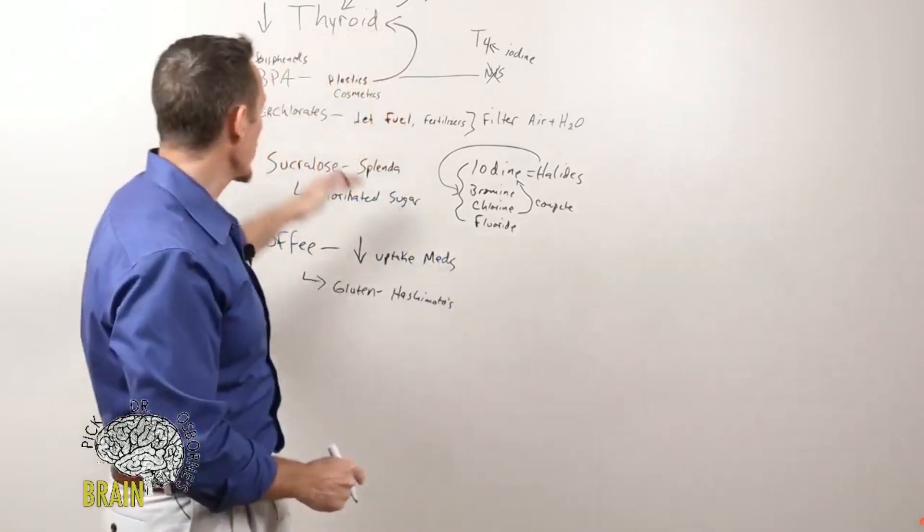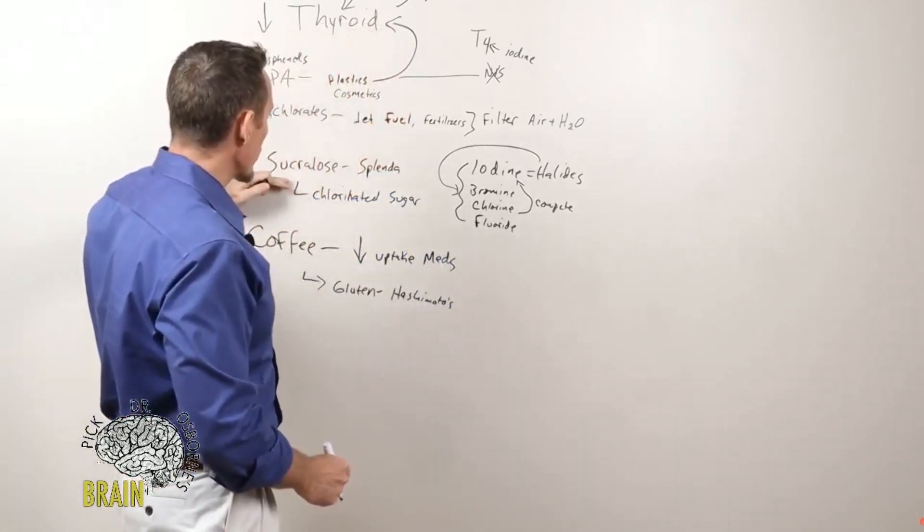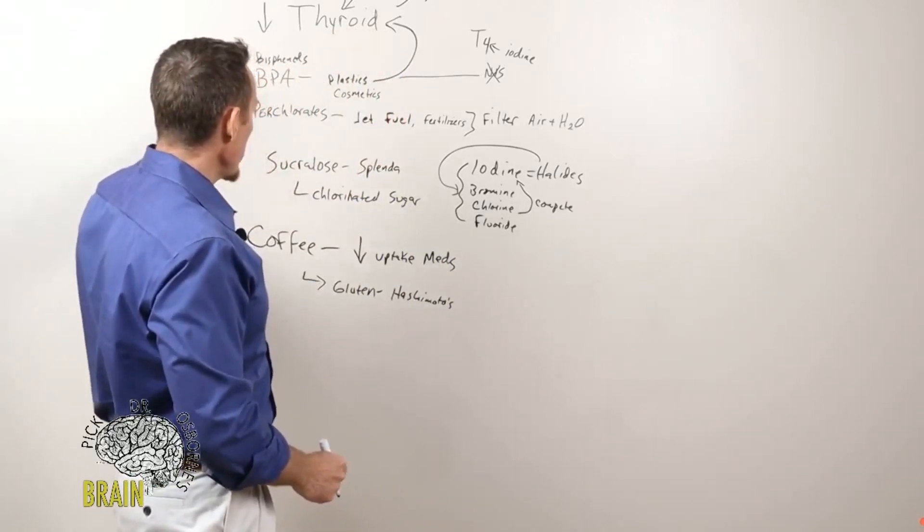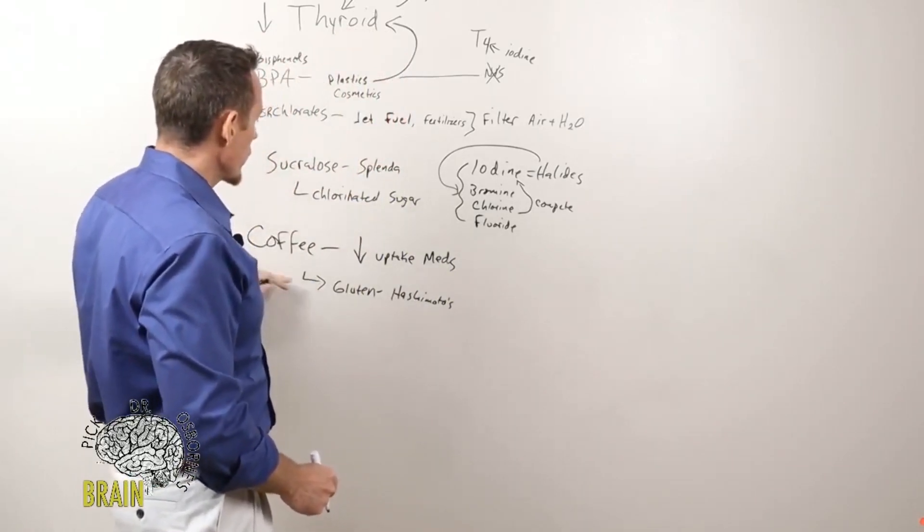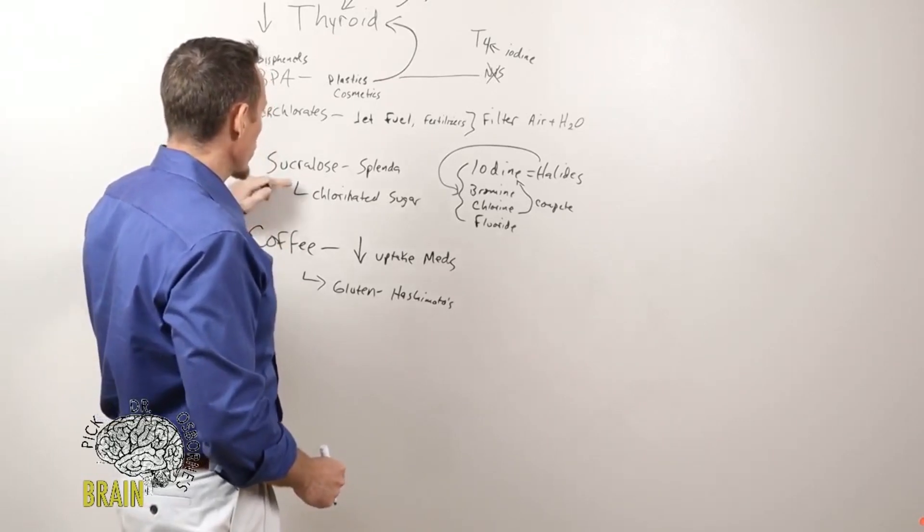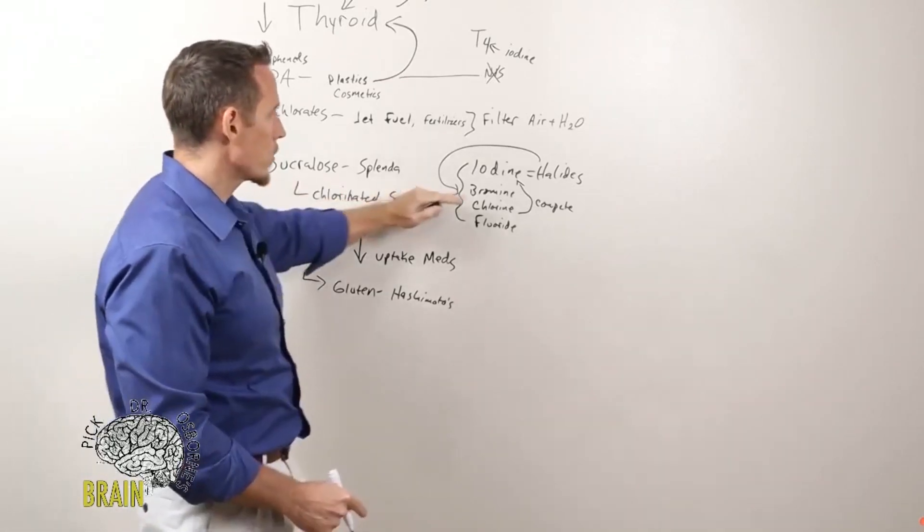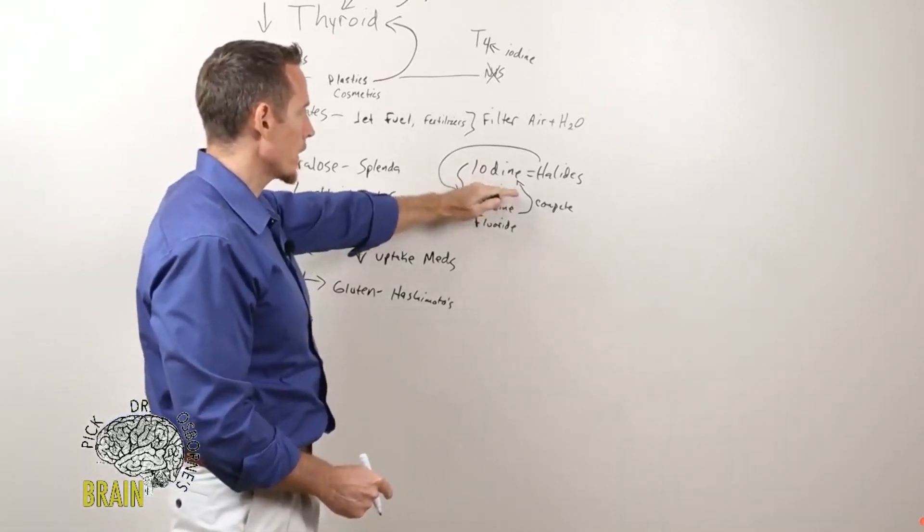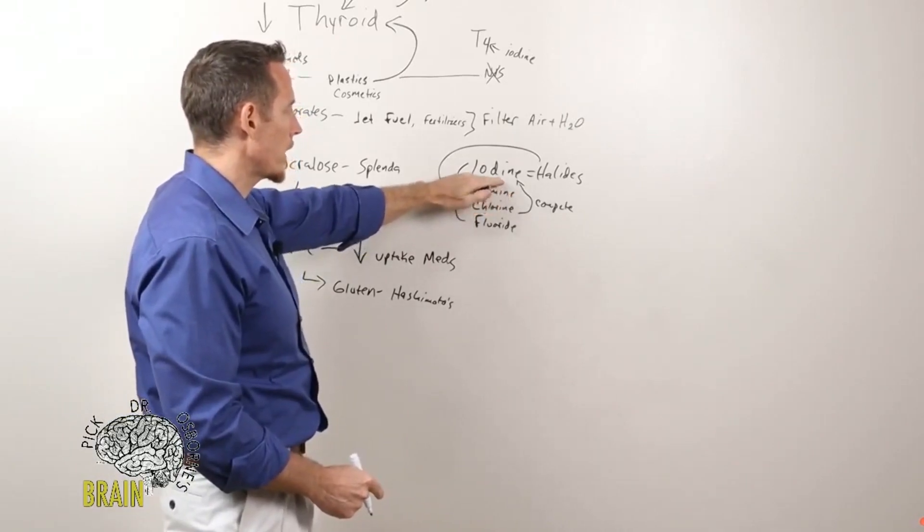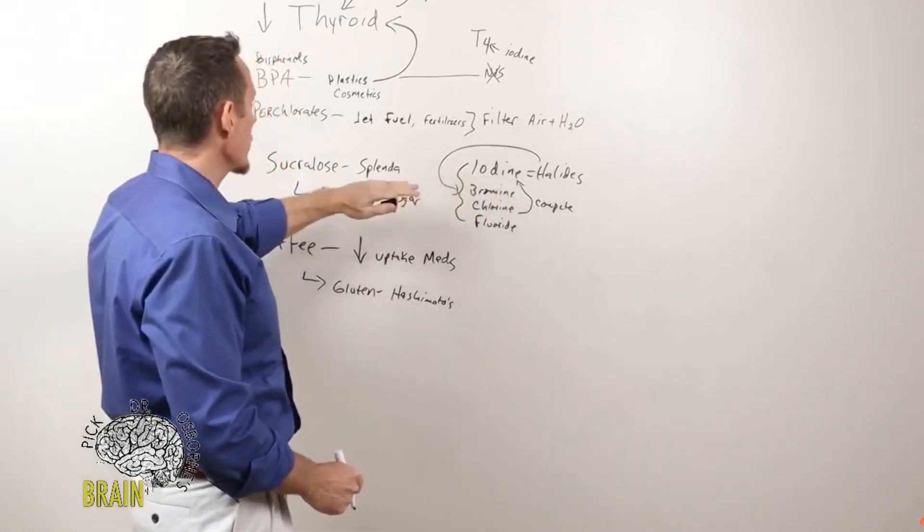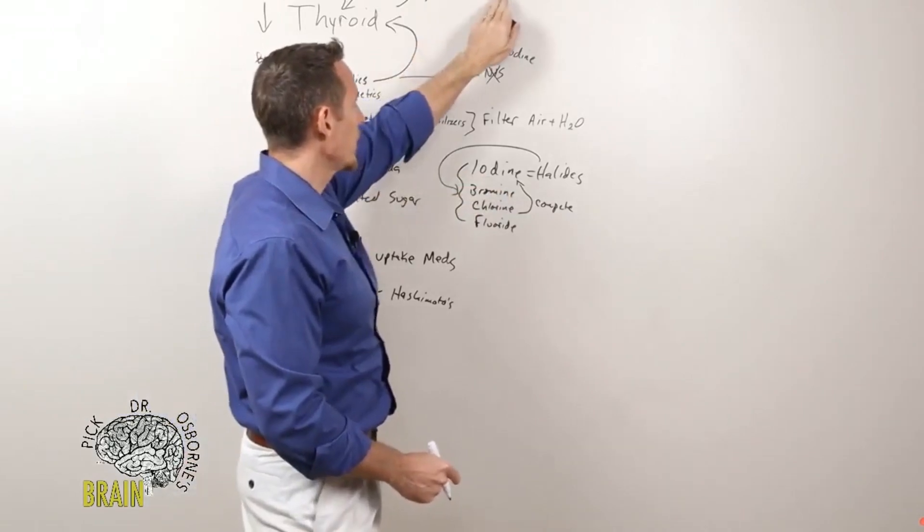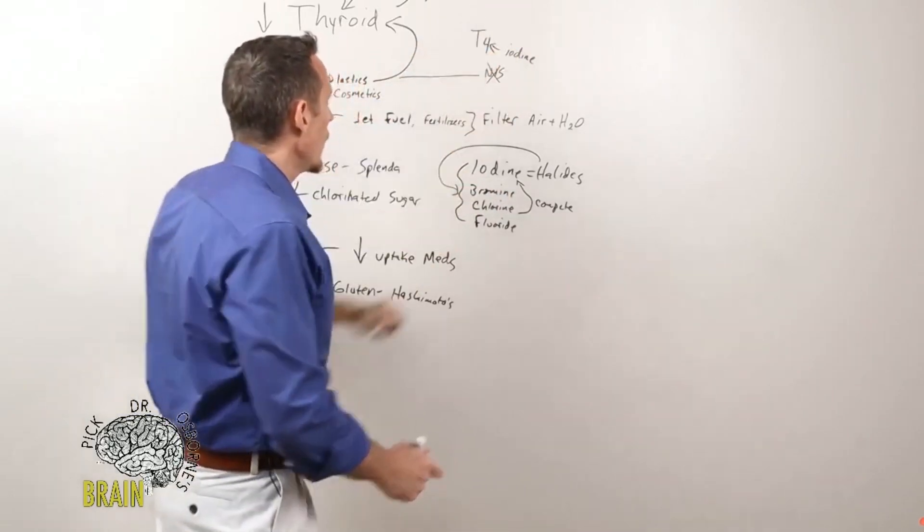All of these things that we're looking at here, except for sucralose, everything here has been shown to contribute to autoimmune thyroid disease, whereas sucralose has been shown to contribute to nutritionally low thyroid because iodine is a nutrient. So it's important that you ask: is my thyroid condition autoimmune or nutritional?